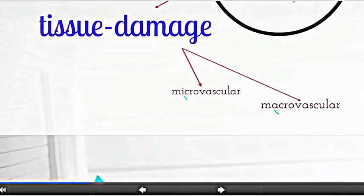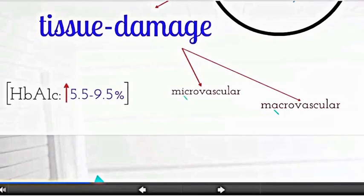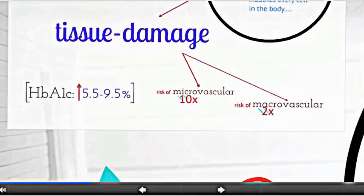Data from these trials indicated that as hemoglobin A1c increases from 5.5 to 9.5%, the risk of microvascular disease increases approximately tenfold, whereas risk of macrovascular disease increases twofold, suggesting that other factors may be involved in the development of diabetic macrovascular disease.